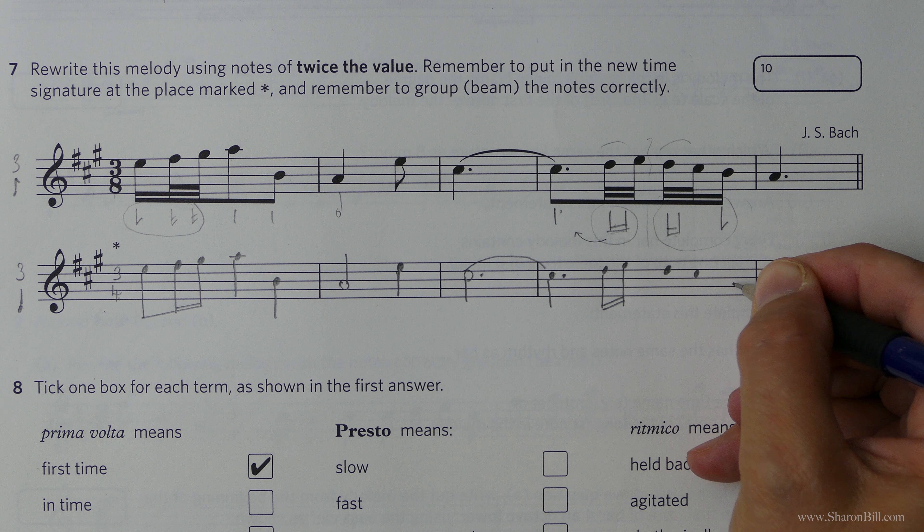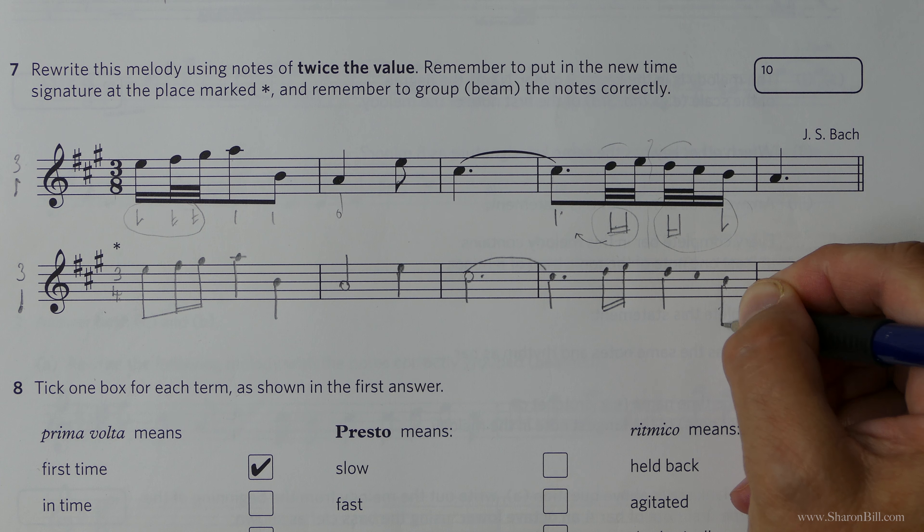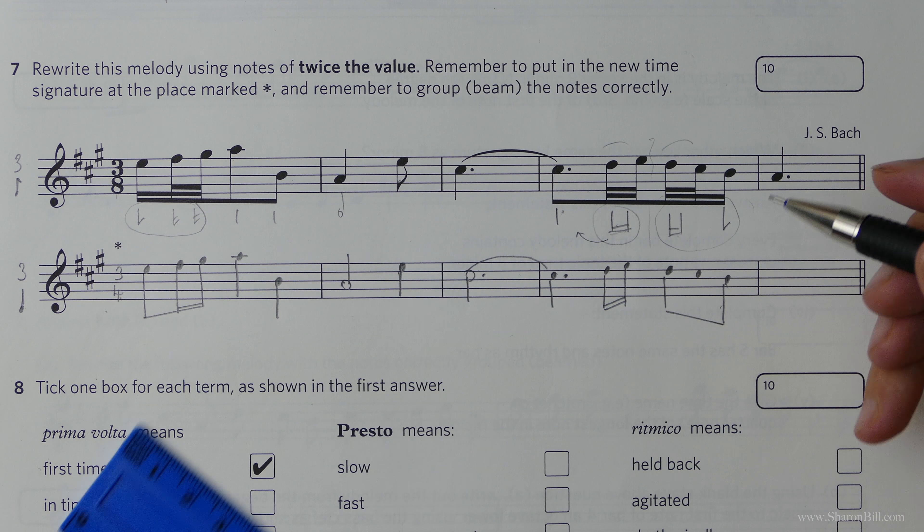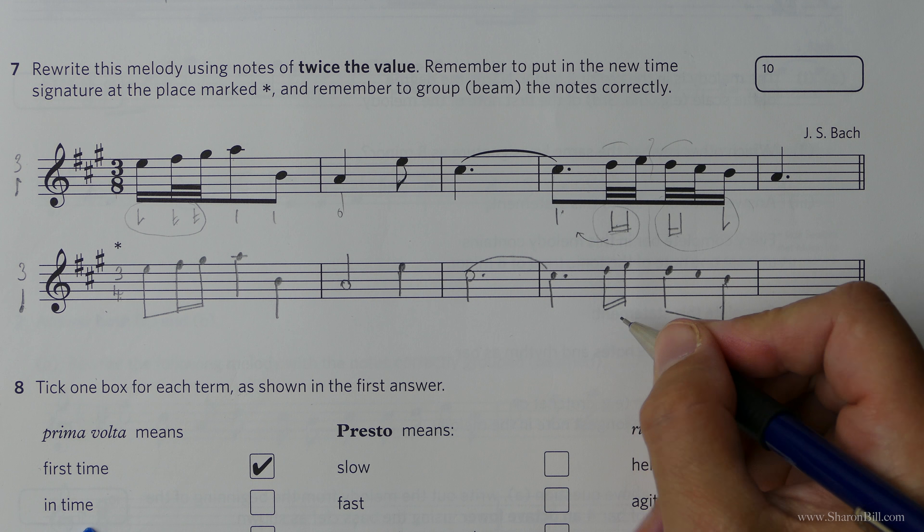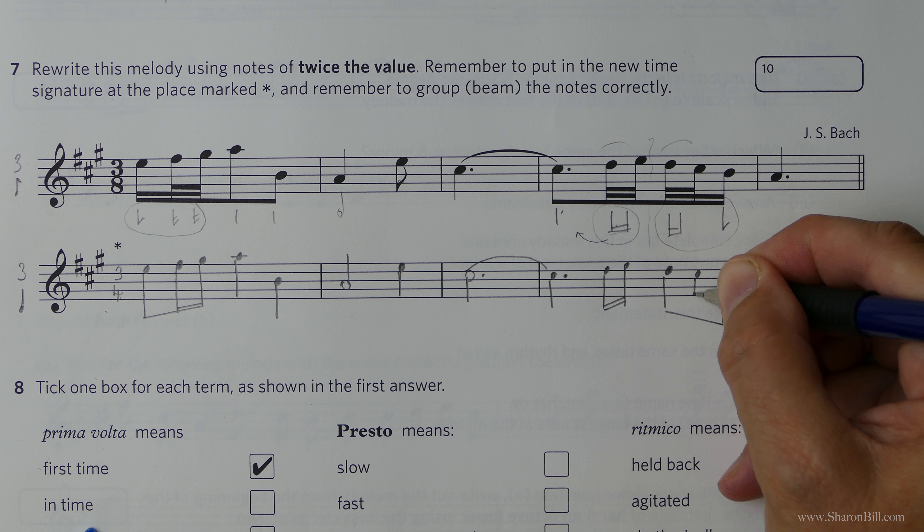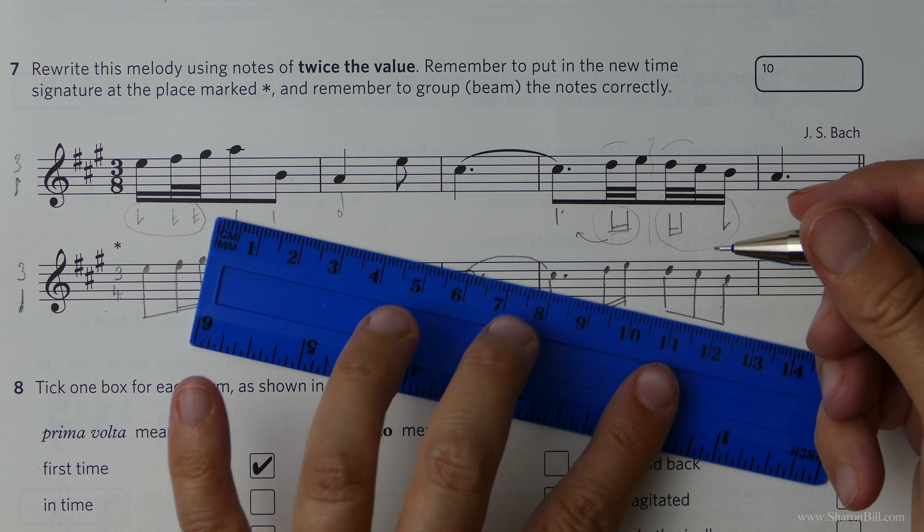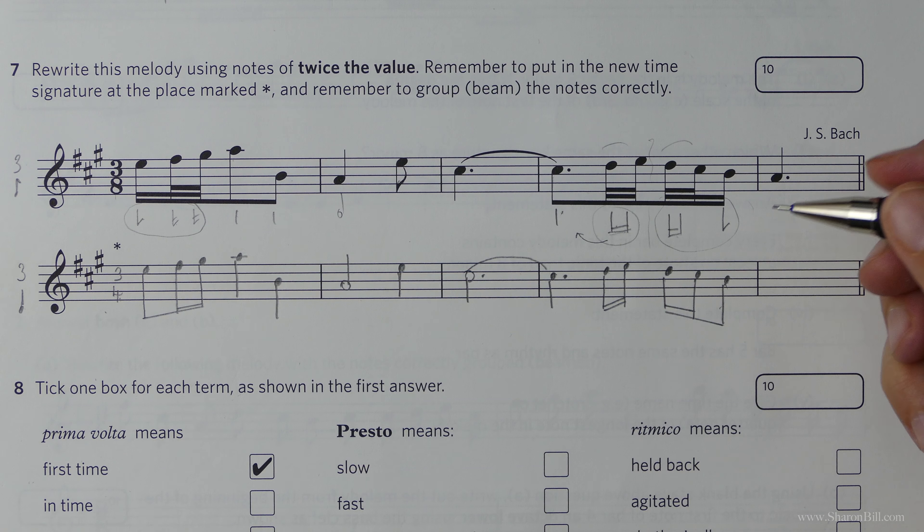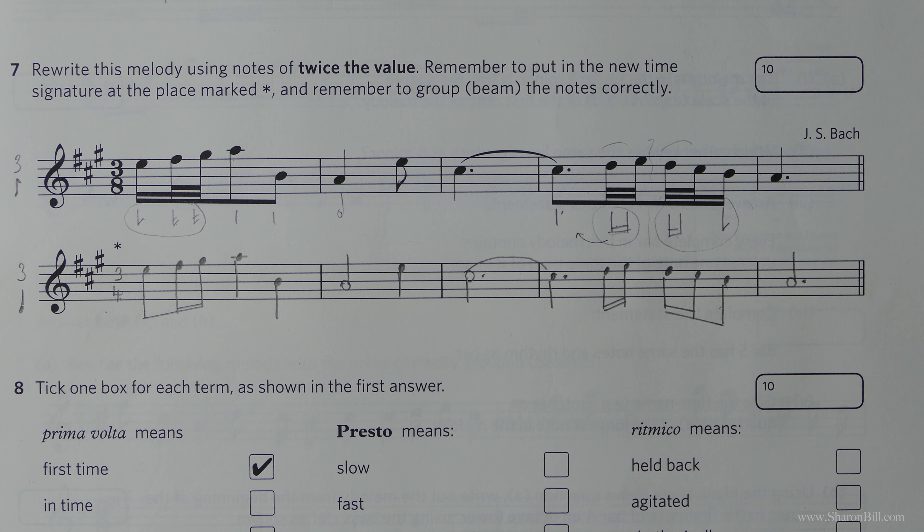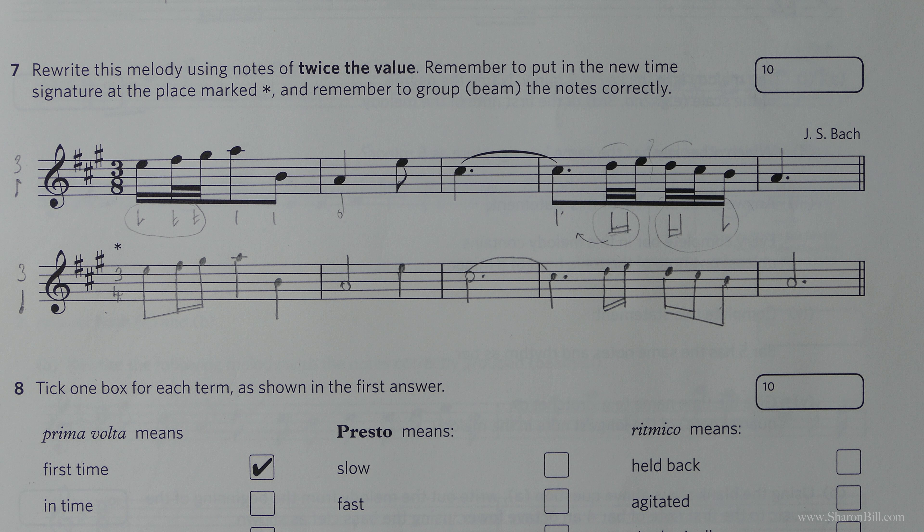Just get the note heads in. Need a ruler for that bit. I can do it quite neatly without a ruler that way, but I can't go that way. However, by all means, use a ruler every time, just to be sure. And then here, this last bar is a dotted minim or a dotted half note.